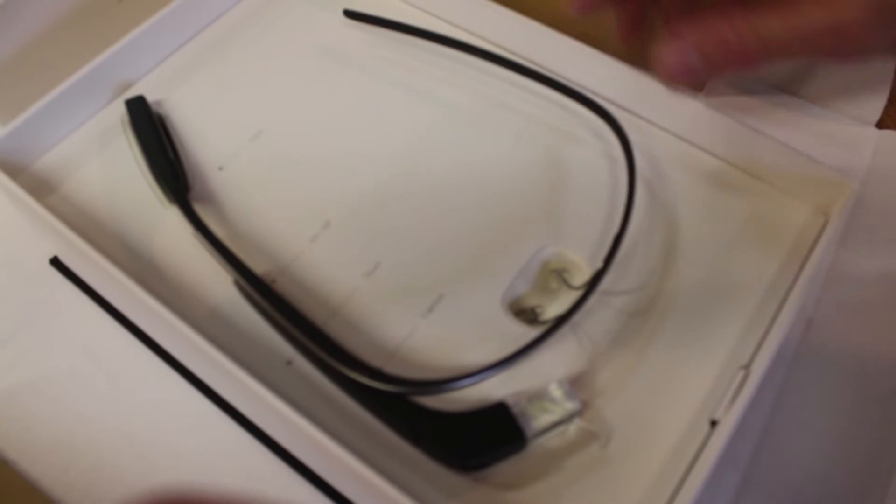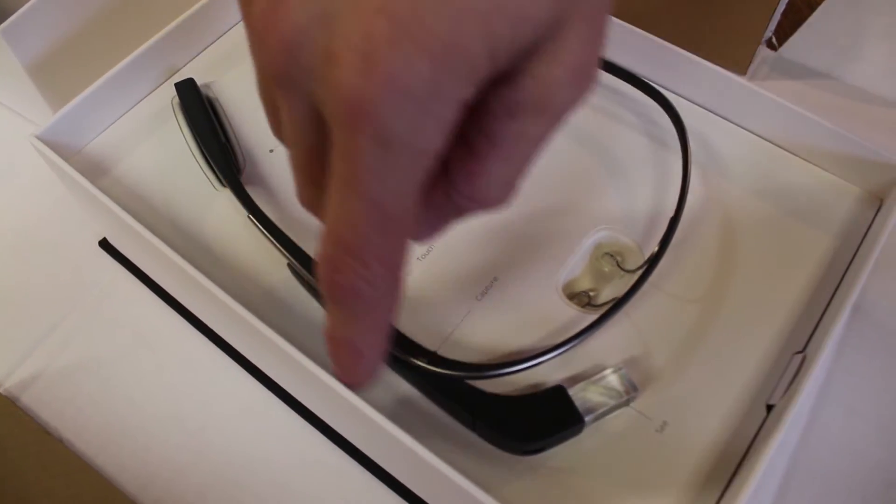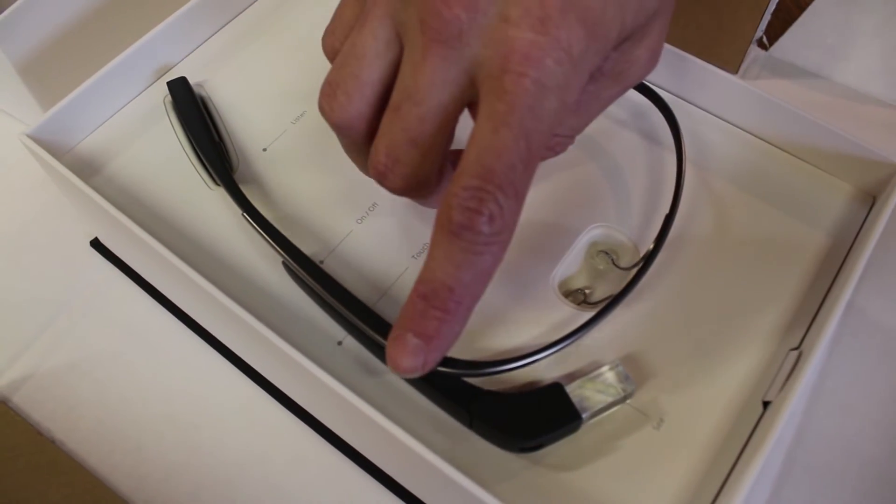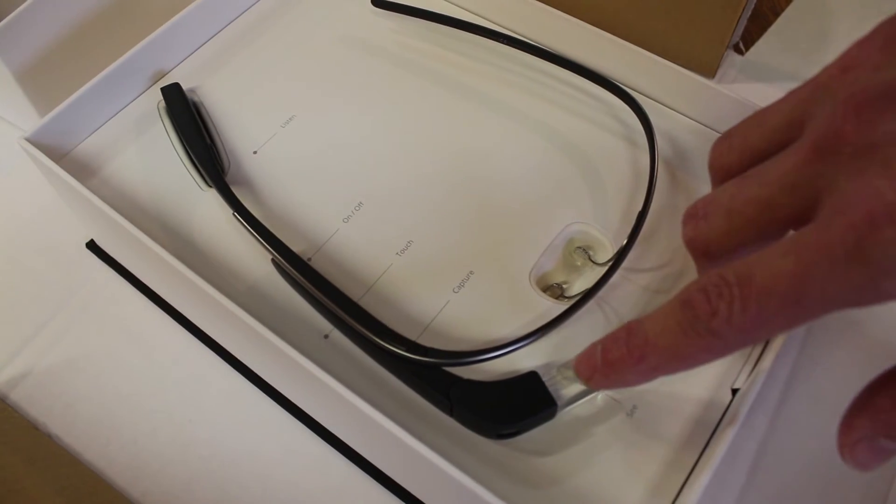As you can see, I went for the charcoal version, which is the closest you can get to black. We've got the bone conduction speaker, on-off button, the touch pad on this side, a capture button that also is a video mode, and the Glass prism itself.